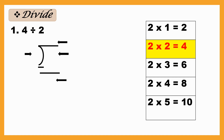The first sum is 4 divided by 2. Before starting the sum, you have to make the division symbol first — the straight line and the curved line. This number 4 you always write inside the symbol, and the number 2 comes outside the symbol.